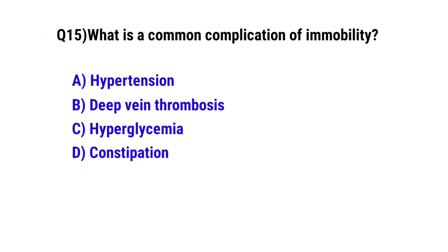Question number 15. What is a common complication of immobility? The correct option is B. Deep vein thrombosis.